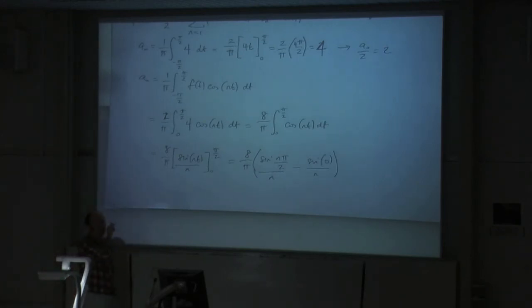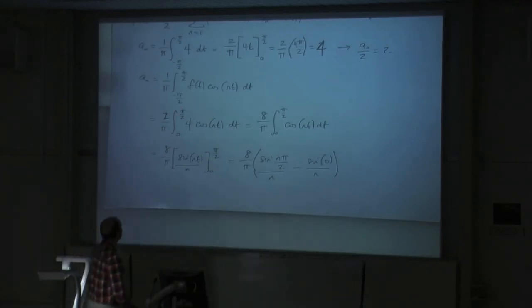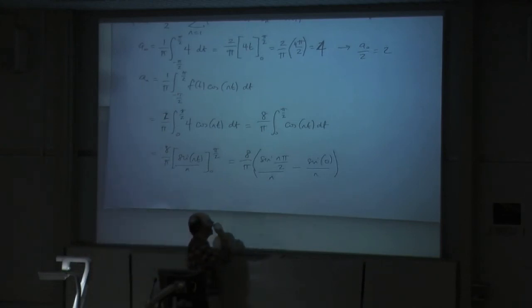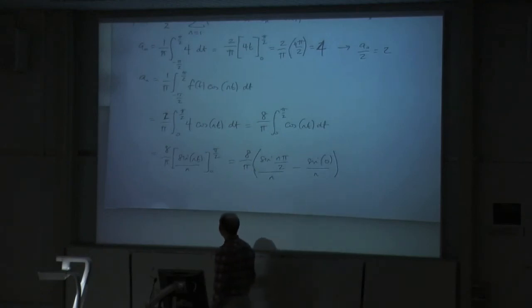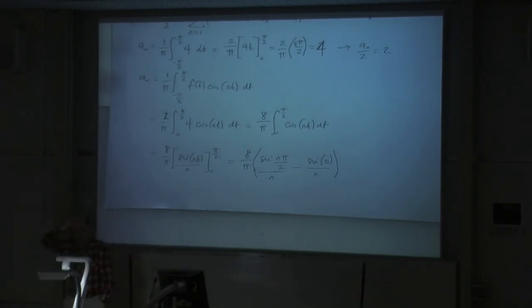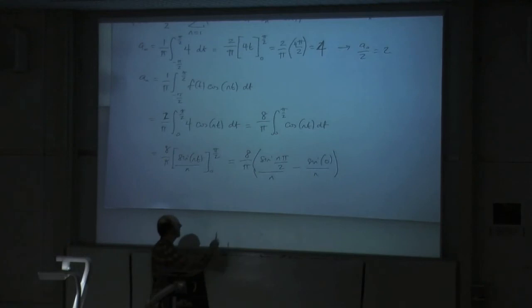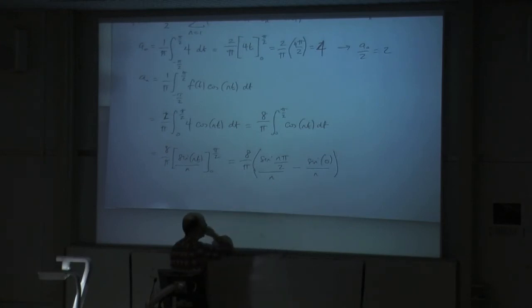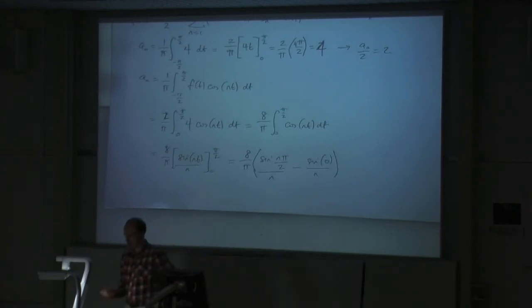It's an even function, so we can multiply the integral by 2 and then solve between 0 and π/2. Since 4 is a constant we can take it out, so we end up with 8 over π times the integral. Integrating cosine is easy: sine of nt over n, evaluated between 0 and π/2. So we end up with 8 over π times sine of nπ/2 divided by n, minus sine of 0. And sine of 0 is 0.